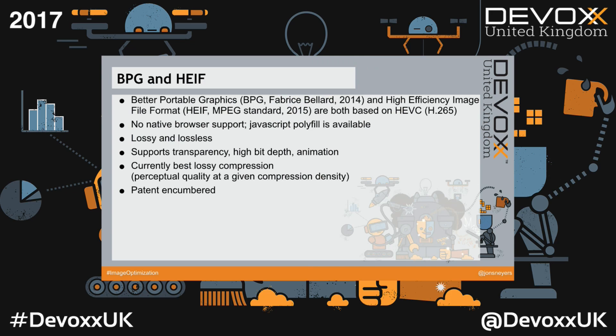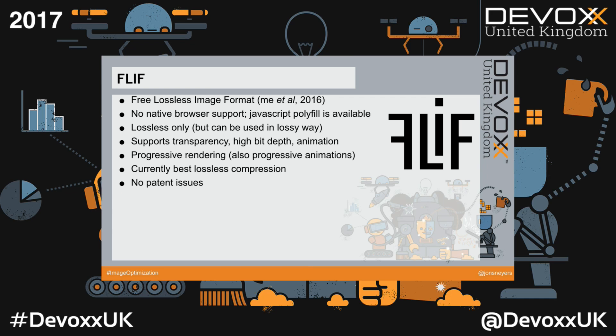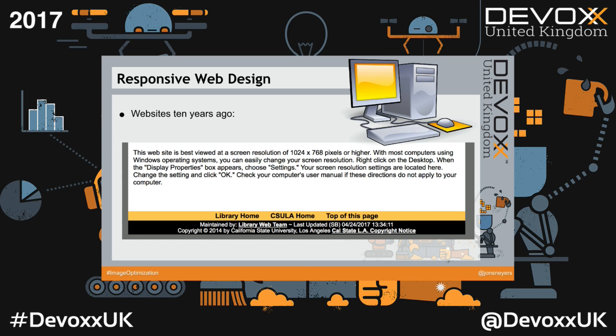There are even newer formats. BPG is based on H.265, the video codec, and is currently the best available format in terms of lossy compression — it gives the best quality for a given file size. Sadly, it has patent issues and no browser support. Then there's the free lossless image format, which I helped invent. Same situation — no native browser support — but it is a lossless format and currently the best available option for lossless compression, with no patent issues.